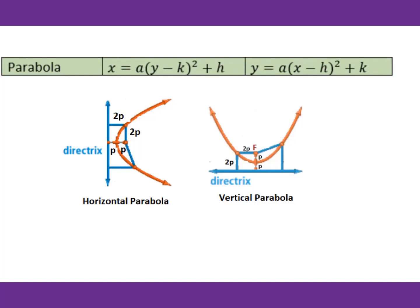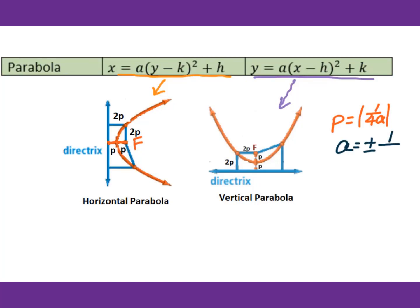For a horizontal parabola, the equation will be in terms of x. For a vertical parabola, the equation is in terms of y. The focus is always inside the curve. The distance from vertex to focus is p, and vertex to directrix is also p. P equals the absolute value of 1 over 4a, and therefore a equals plus or minus 1 over 4p.